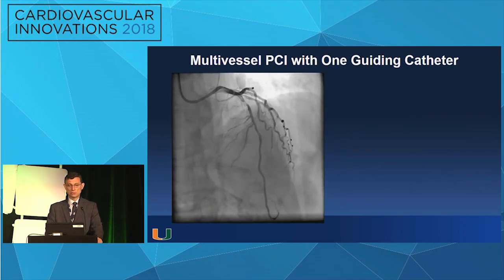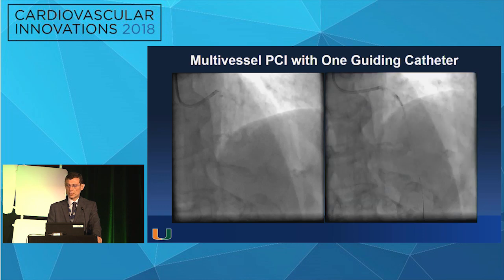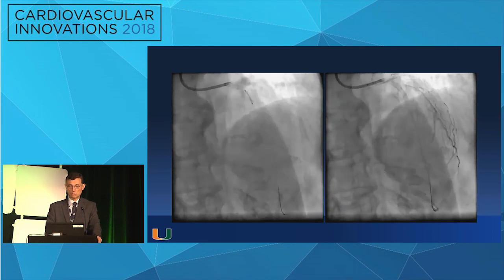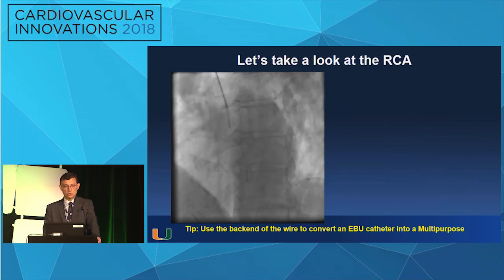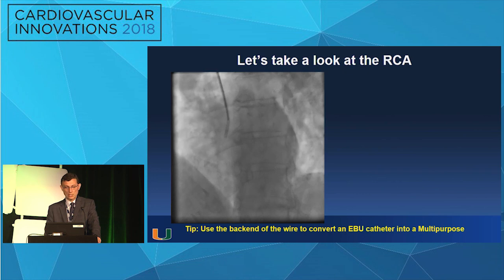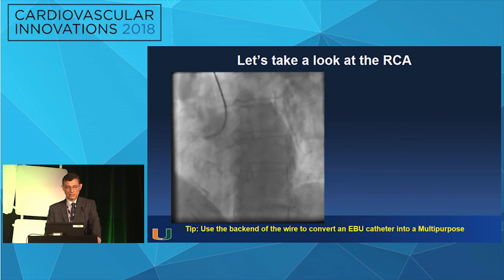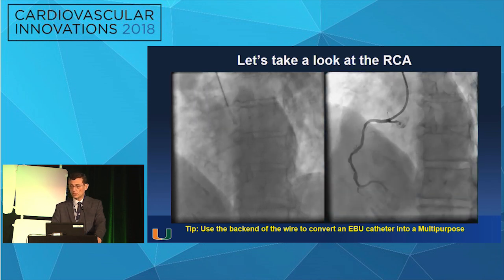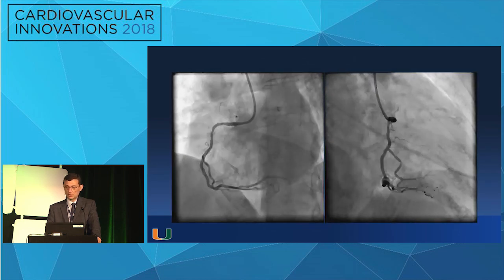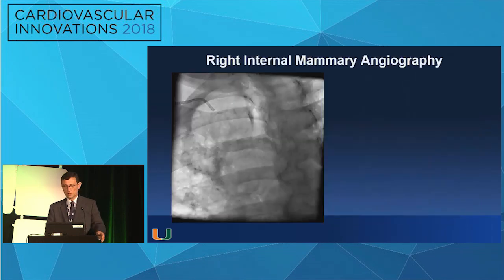Multivessel PCI with one guiding catheter — you use your EBU to angioplasty the LAD with a nice result. For another primary or subacute PCI taken straight from the ER, advance the back end of the J wire — that will straighten the EBU and transform it into a multipurpose. Then rotate the multipurpose clockwise into the other side, slowly advance into the right coronary cusp until you find the right coronary. Slowly pull the wire, let the catheter take its shape, and you're in. Once you're in, you have wonderful support, found the lesion in the right coronary, ballooned it, and finished multivessel revascularization.